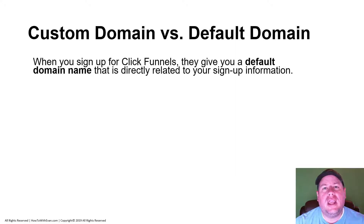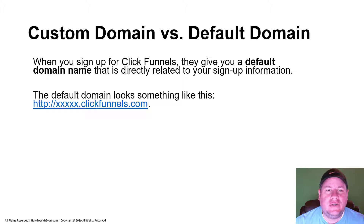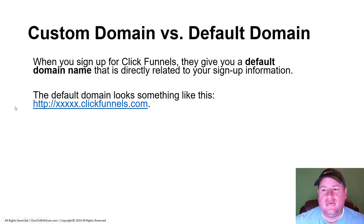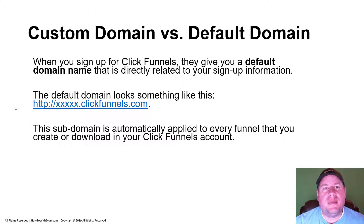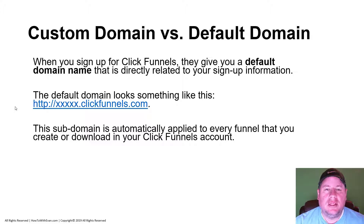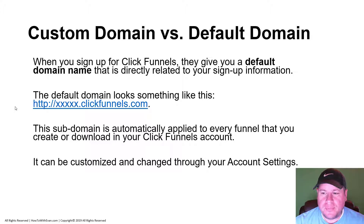When you sign up for a ClickFunnels account, they give you a default domain name — it's called a subdomain that is directly related to your sign-up information. This default subdomain looks something like your information on the prefix followed by .clickfunnels.com, and it is automatically associated with every funnel you create or download into your ClickFunnels account. It can be customized through your account settings within ClickFunnels.